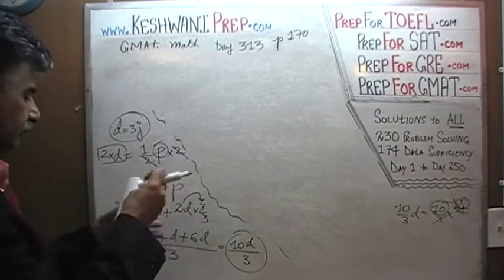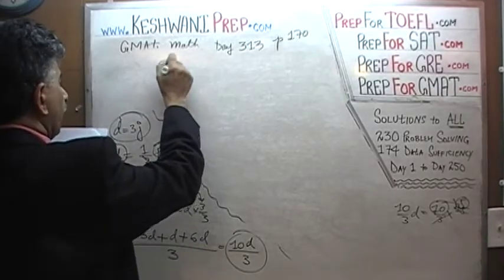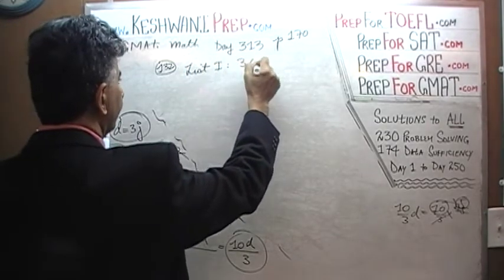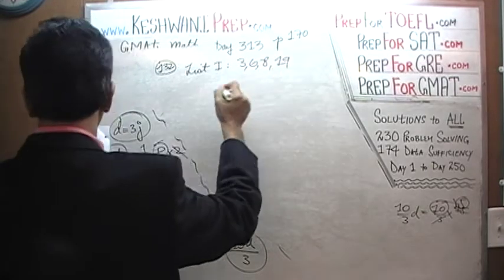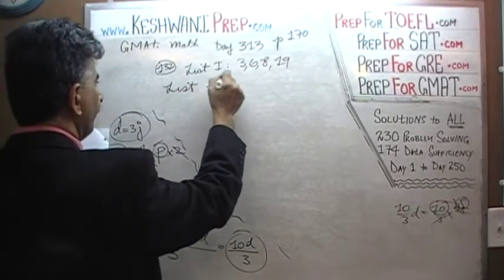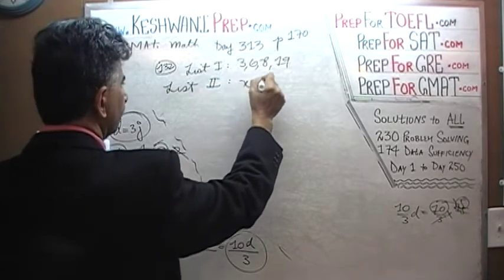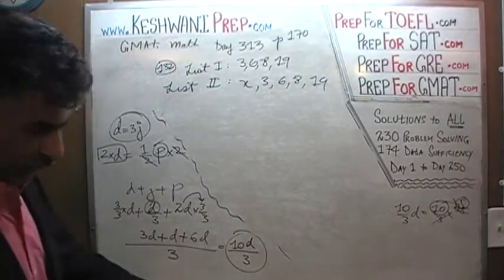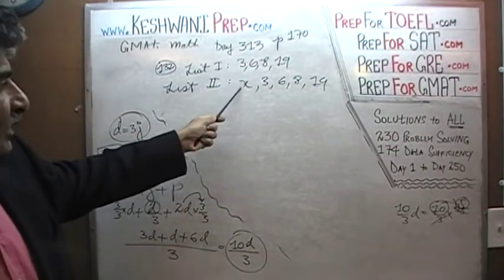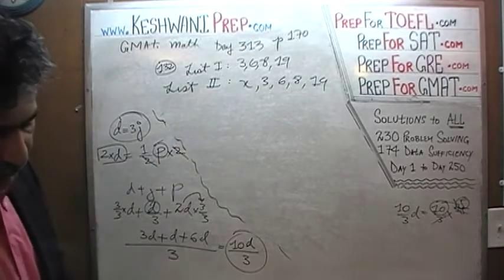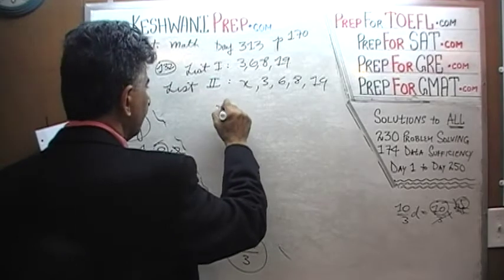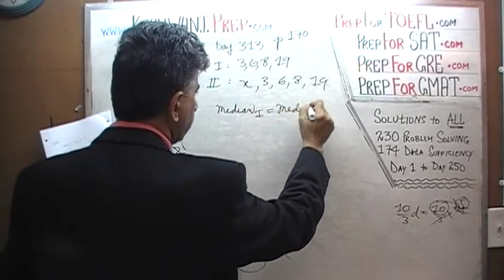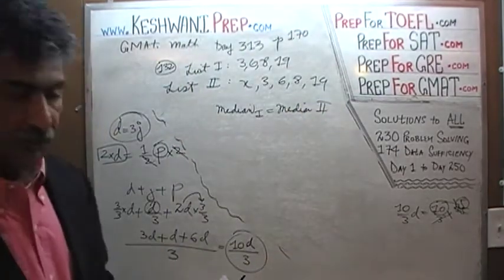Problem 132. In 132 they give us list 1, which is 3, 6, 8 and 19. Here is list 2, which is x, 3, 6, 8 and 19. Essentially they are the same list, except this one has one more entry which they are not telling us what it is. It's represented with the letter x. What we are told is that the median of list 1 is same as the median of list 2, and the question is what is the value of x.